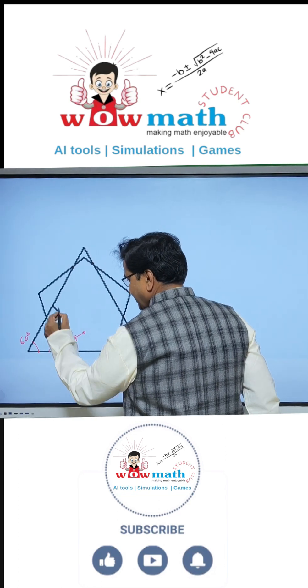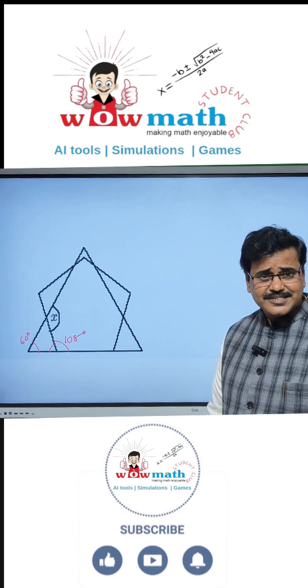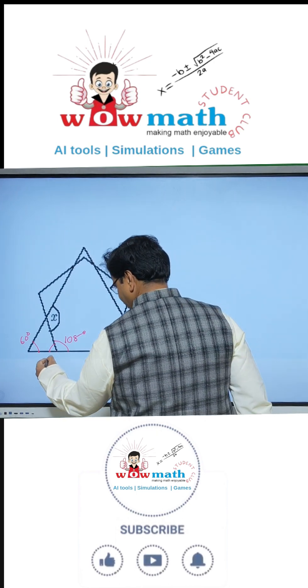Therefore, the exterior angle of a regular pentagon is, yes, you are correct, 72 degrees.